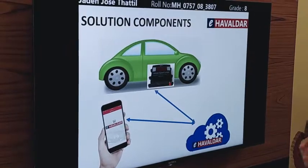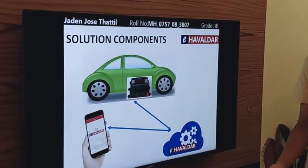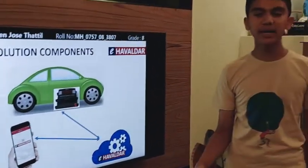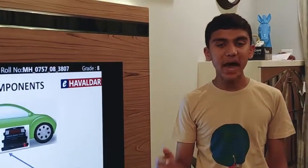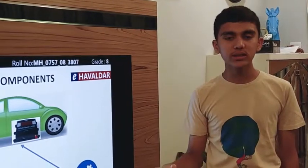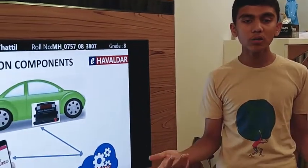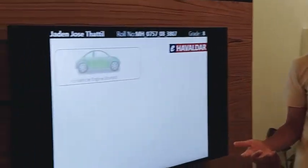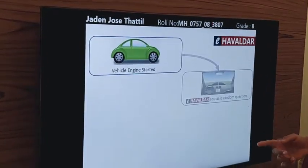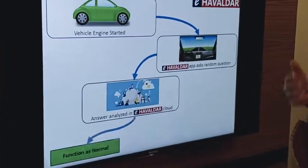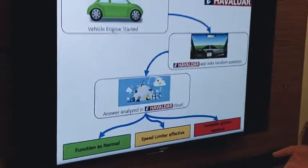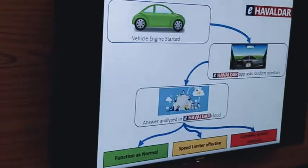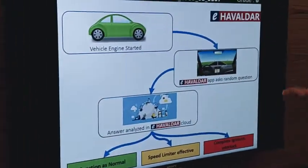e-Hawaldar is based on the fact that as blood alcohol content increases, speech and memory get impaired and so do driving skills — there is a direct correlation among all these parameters. When the driver starts the engine, the app will ask him a random question to test his reasoning and memory. Examples of these questions include current location, past locations visited, or simple mathematical questions.